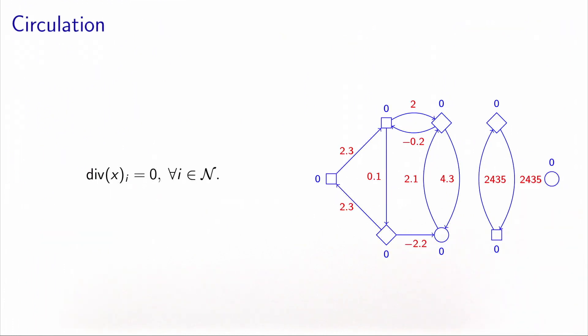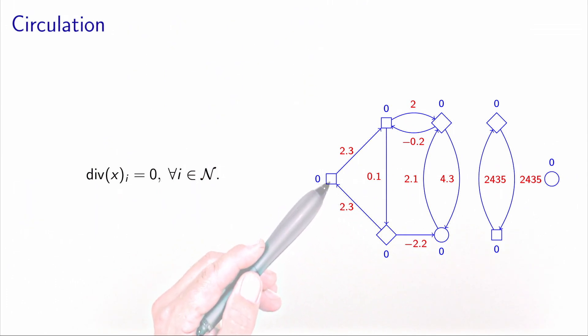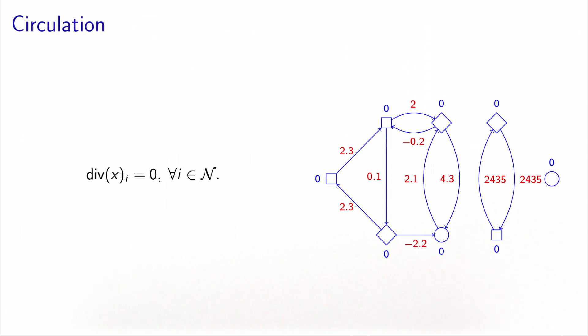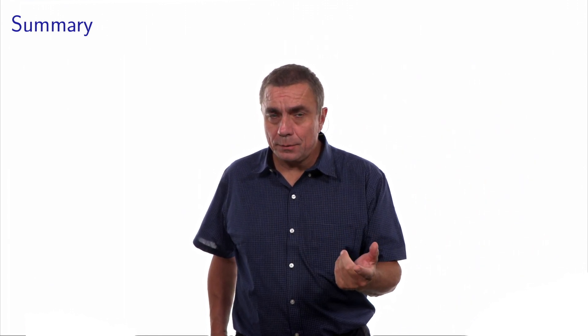There is a specific case where all nodes have a divergence of 0, meaning at each node every unit of flow entering is also exiting. By changing the flow values on the arcs, the divergence becomes 0 everywhere. This specific case is called a circulation — the flow is simply circulating on the network. If divergence is positive: supply node. If negative: demand node. If all divergences are 0: circulation.